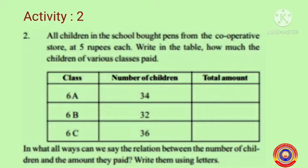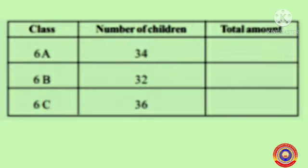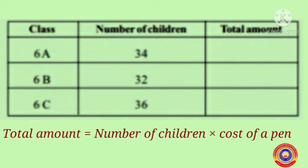Activity number 2: All children in the school bought pens from the cooperative store at 5 rupees each. Write in the table how much the children of various classes paid. The number of children in 6A, 6B, and 6C are given. We have to find the total amount they paid for the pen, and write the relation between the number of children and the amount they paid using letters.